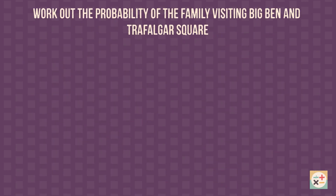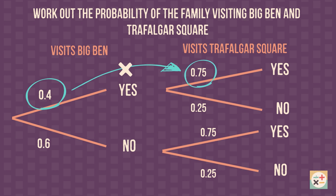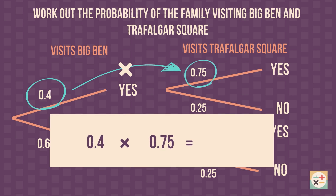Secondly, to find out the probability of a combination of outcomes, multiply the probabilities along the appropriate branches, depending on the combination of outcomes you need. Have a look at this question. We need to calculate the probability of the family visiting Big Ben as well as Trafalgar Square. In this case, we need to look at the branches for visiting both Big Ben and Trafalgar Square. So the answer to this question is 0.3.